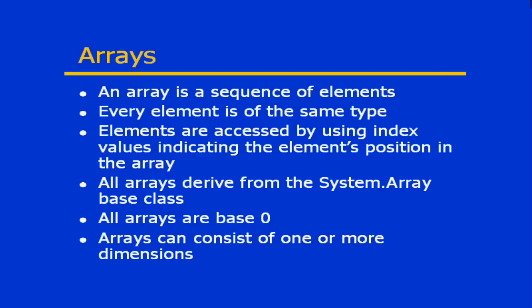Elements are basically accessed using what's called an index value or an indexer, and that indicates the individual element's position within the array. All arrays basically derive from the base class System.Array, and every single array is always going to be zero-based in C#. That means that if I have an array of ten integers, I would access those elements using element 0 first, then element 1, element 2, etc., through element 9.